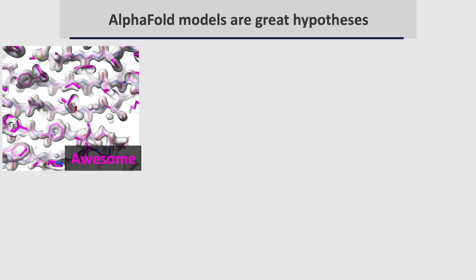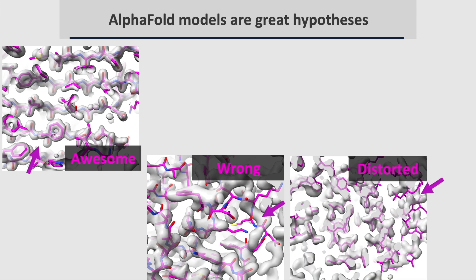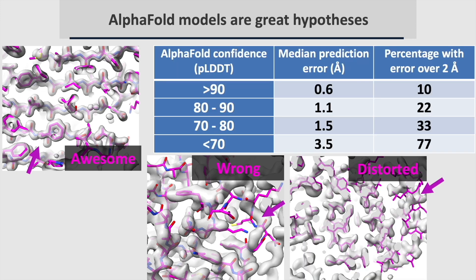AlphaFold models are great hypotheses. Often they are awesome. However, sometimes even high-confidence models can be wrong or distorted. Here is a handy chart showing how accurate you can expect AlphaFold models to be.